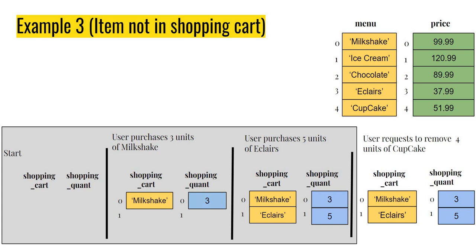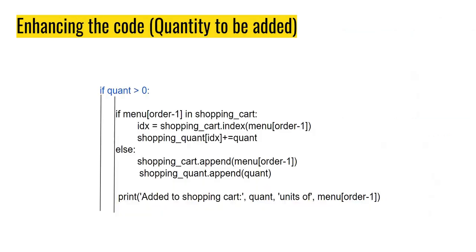Now let's see how we can enhance our program to handle all of this in code. Remember, the way we added things to the shopping cart was through this piece of code where we first determined whether the item is in the shopping cart or not. If it's in the cart we added that amount; otherwise we appended to the list.